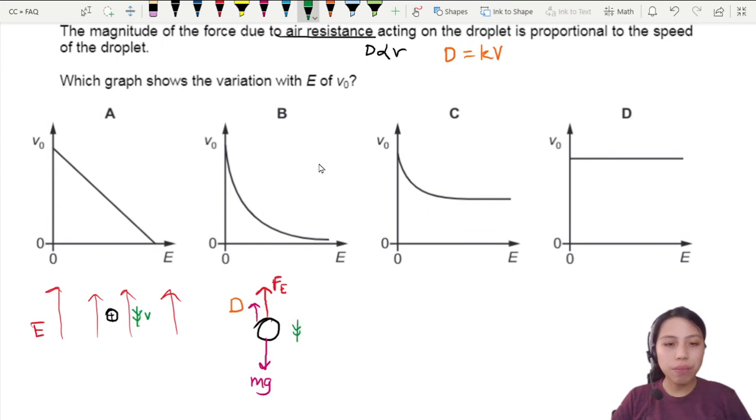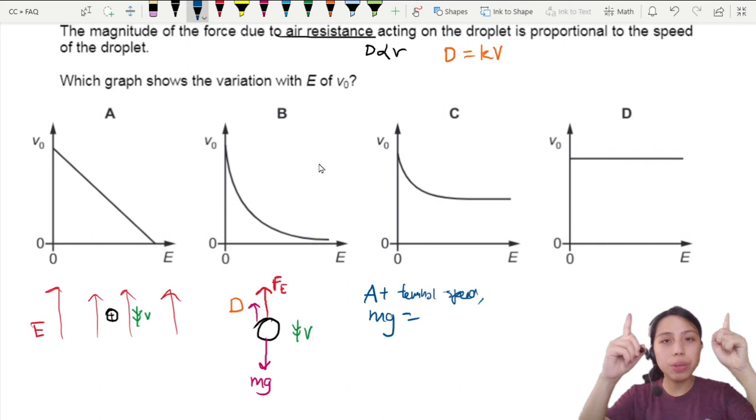At terminal velocity, a very special condition occurs. Terminal velocity, there's no net force, zero acceleration, zero net force. So at terminal velocity or terminal speed, the downwards force mg is equal to all the force pointing upwards, so that will be D plus the electric force.